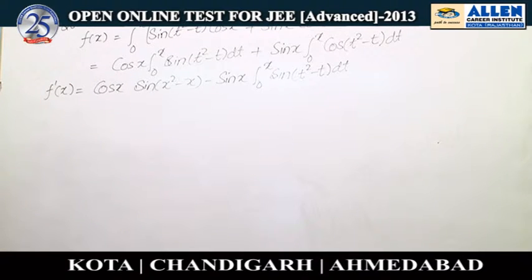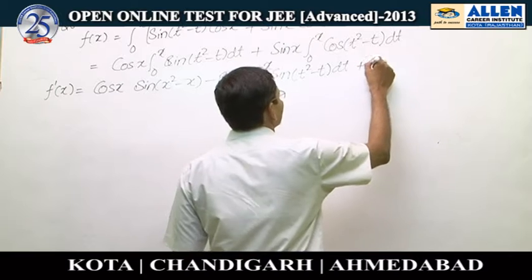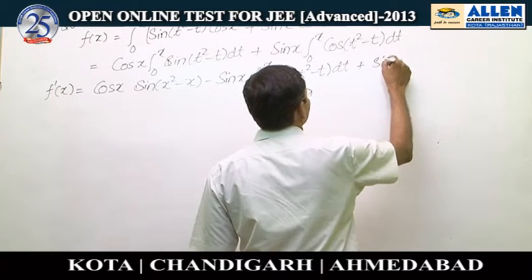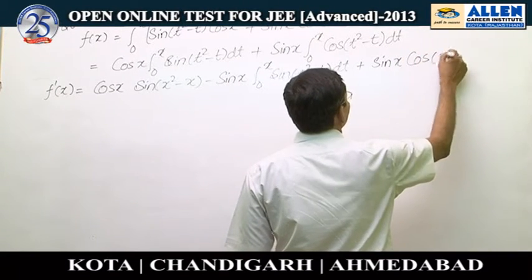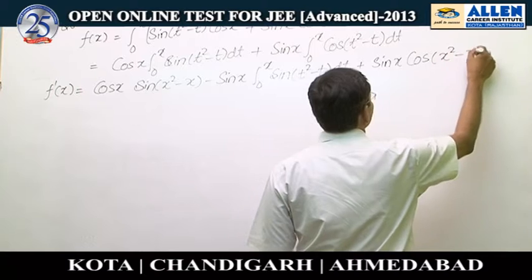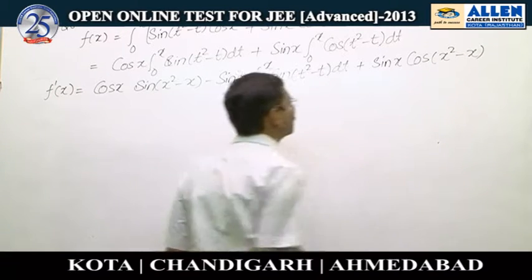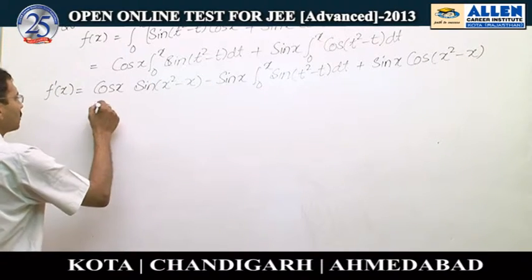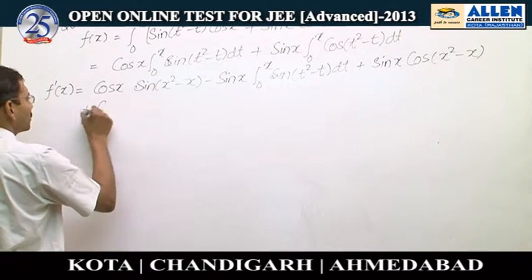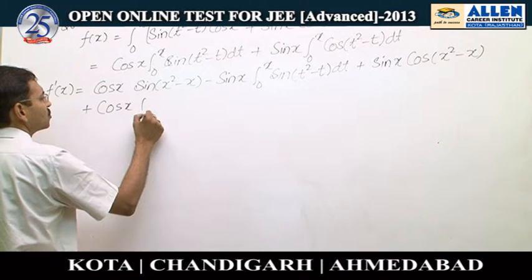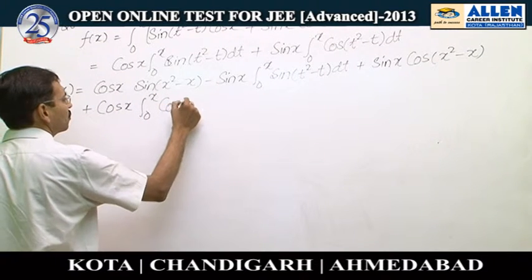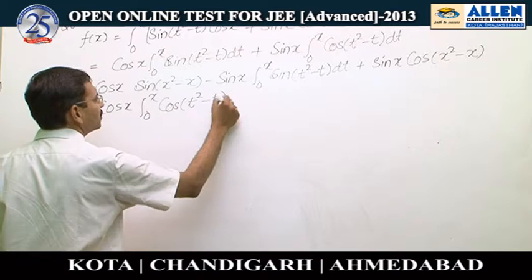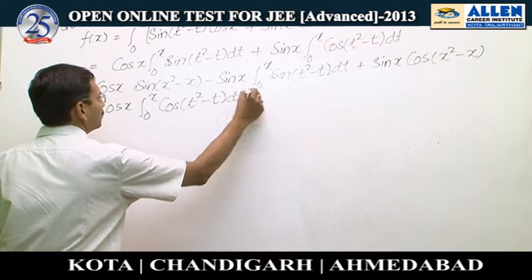Now we differentiate the second term. sin(x) as it is, the differentiation of this part is cos(x² - x). The differentiation of sin(x) is cos(x)·∫₀ˣ cos(t² - t) dt.